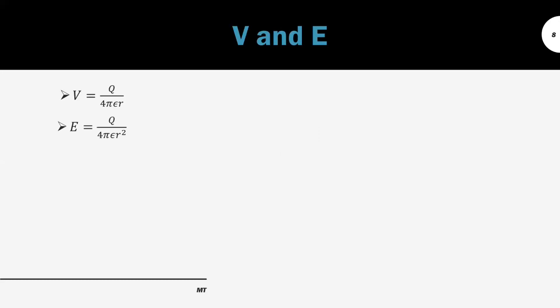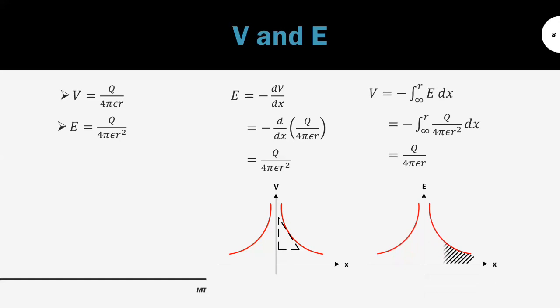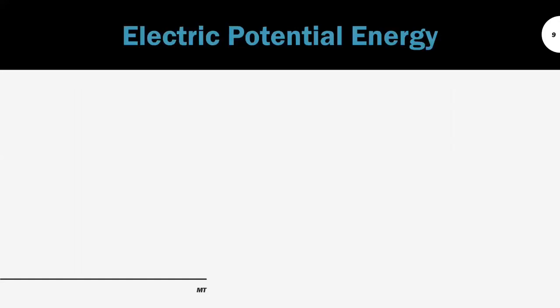Next, we look at the relationship between V and E. E is the differentiation of V with respect to x. Substituting the formula for V, we get E equal to Q divided by 4πεr². From the graph of V against x, we can obtain E by calculating the gradient at a point of interest. Conversely, V is the integral of E with respect to x, giving V equal to Q divided by 4πεr. V can also be obtained from the area under the graph of E against x.